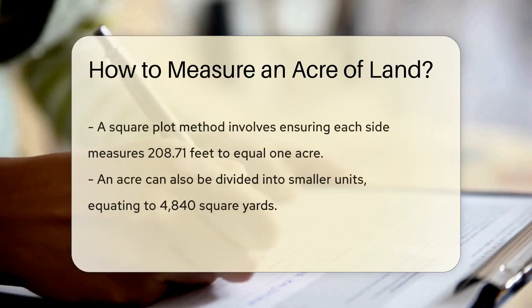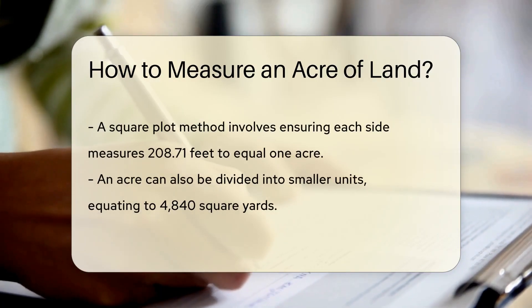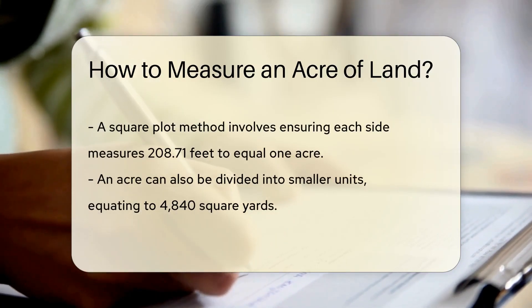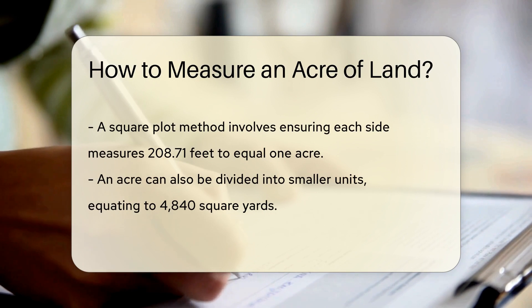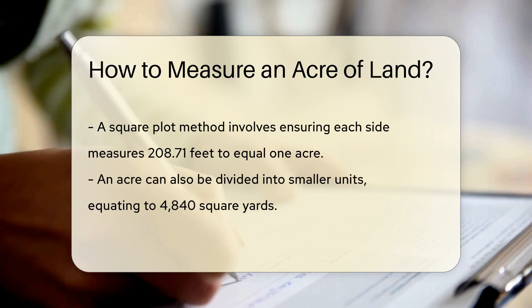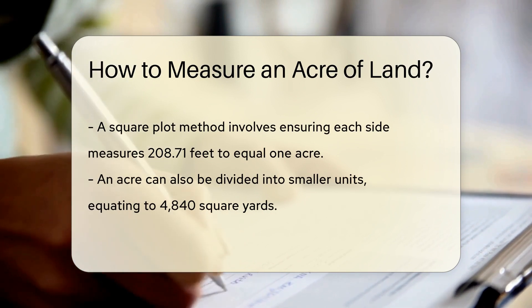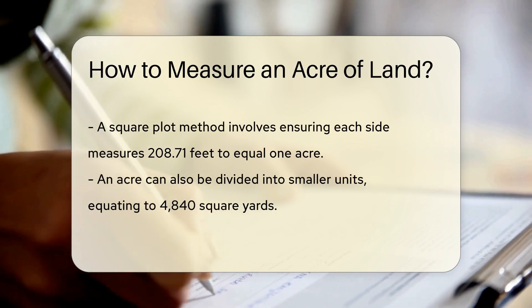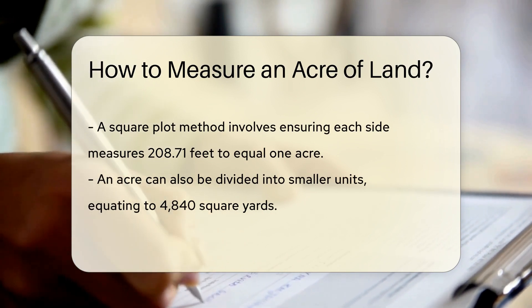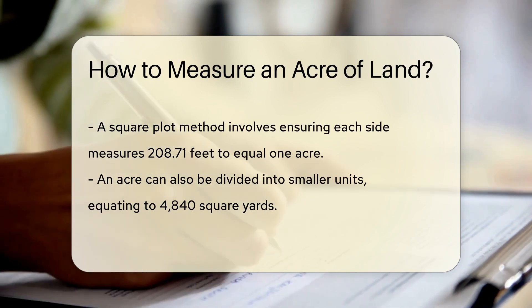One way to measure an acre is by starting with a square plot of land and ensuring each side is 208.71 feet long. This will give you an area of one acre.